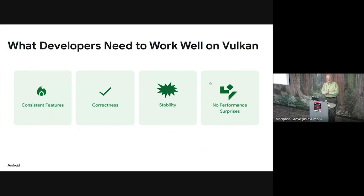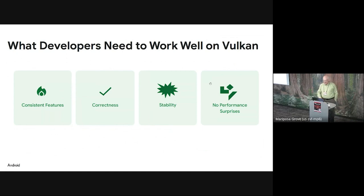We want everybody to be able to be successful on top of Vulkan. For that, we need consistent features — some talks this week have discussed how you can't really depend on things. We need correctness, stability, and no performance surprises. You could lump all of those together into the term quality, but there are different aspects to it.